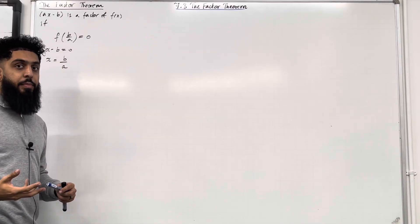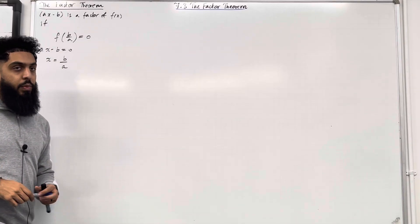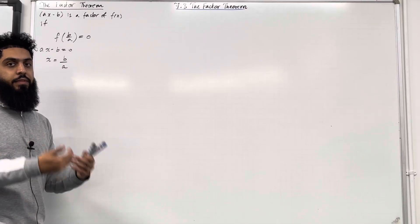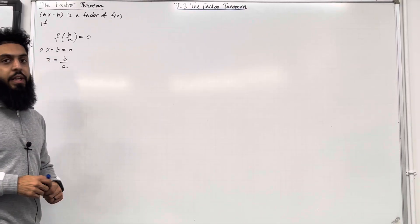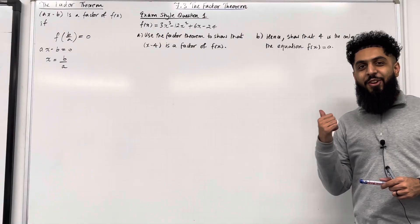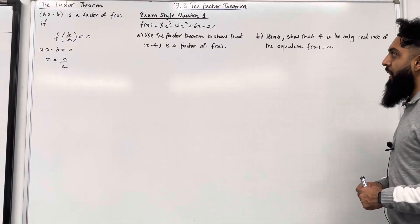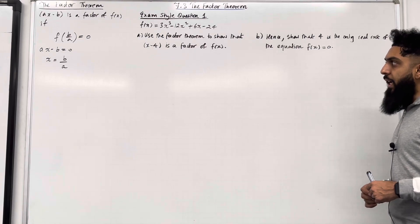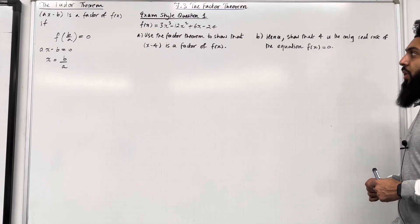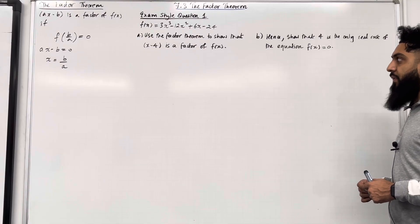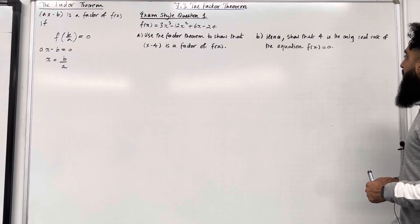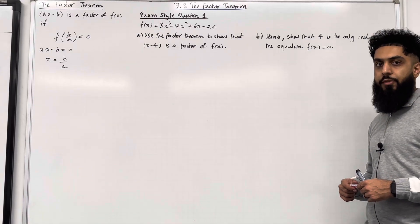In this video I'm going to go through two exam style questions where we use the Factor Theorem to show that a linear is a factor of a function, and then we'll be solving problems. Exam style question 1: f(x) = 3x³ − 12x² + 6x − 24. Part A: use the Factor Theorem to show that x − 4 is a factor of f(x). Part B: hence show that 4 is the only real root of the equation f(x) = 0.